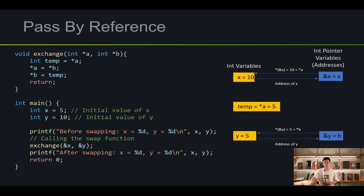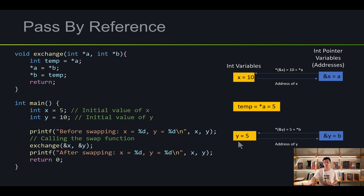Next line: dereference of b equals temp. Remember, temp is equal to 5. So dereference of b, instead of being 10, is now equal to 5. And if this equals 5, then y is also equal to 5. So now, as you can see, we have successfully swapped what these variables are pointing to — x equals 10 and y equals 5.